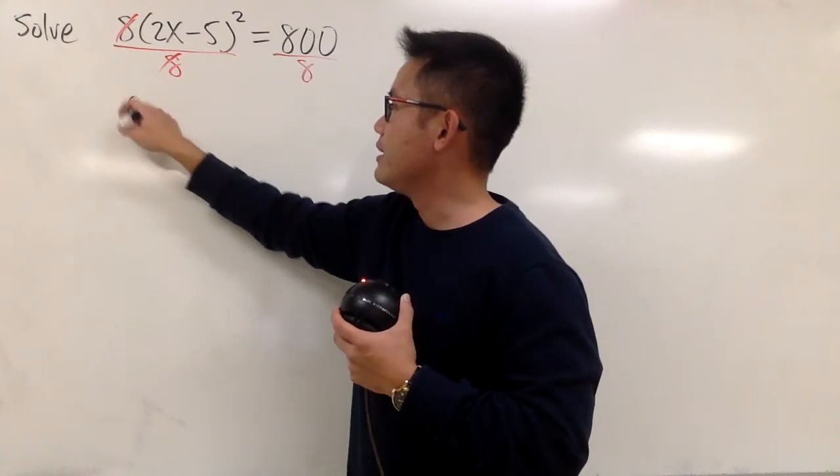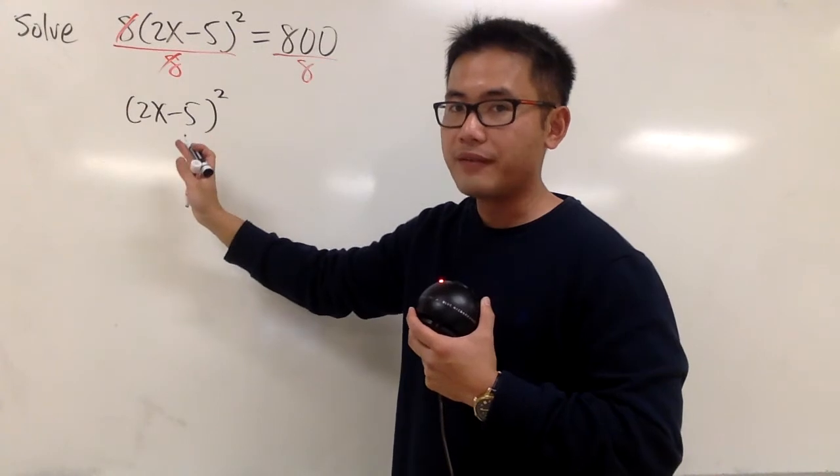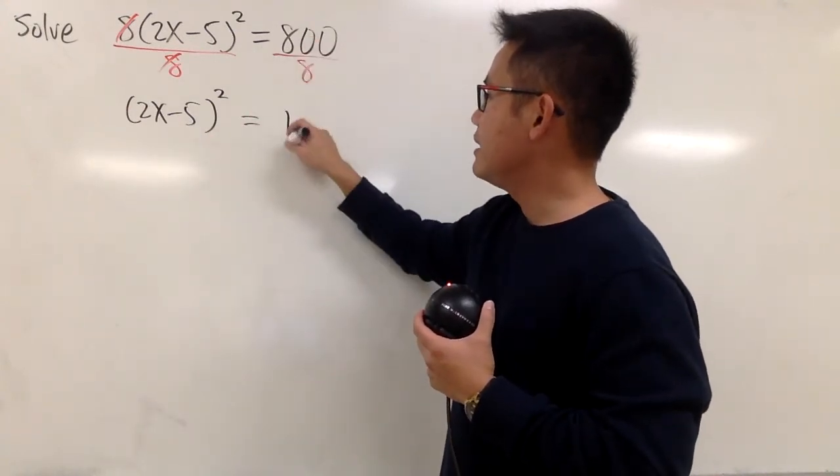And you see, we can just get the 2x minus 5 in the parentheses, square. This is by itself now on the left-hand side, and 800 divided by 8 is 100.